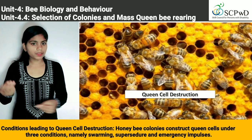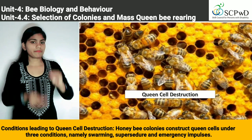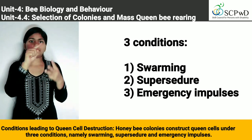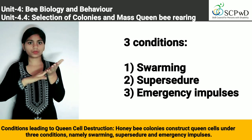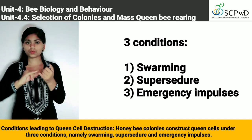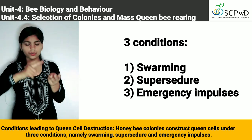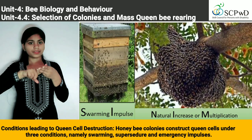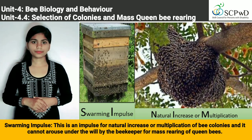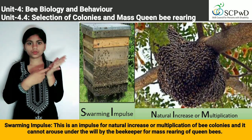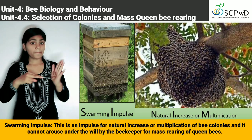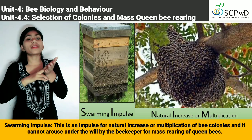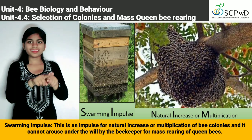Conditions leading to queen cell construction. Honey bee colonies construct queen cells under three conditions, namely: swarming, supersedure, and emergency impulses. The swarming impulse is a natural impulse for increase or multiplication of bee colonies, and it cannot be aroused at will by the beekeeper for mass rearing of queen bees.